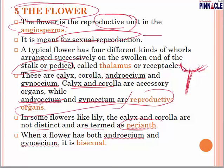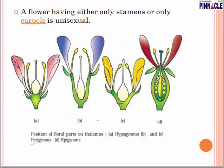When a flower has both androecium and gynoecium, that flower will be called a bisexual flower; otherwise it will be unisexual. A flower having either only stamens or only carpels is unisexual. Stamen refers to the male part and carpel refers to the female part. If only one is present, it is unisexual; otherwise, if both androecium and gynoecium are present, it is bisexual.